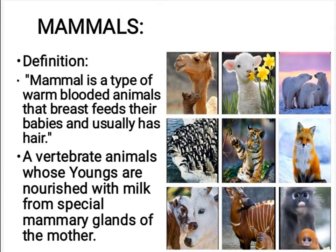Definition of mammals: a mammal is a type of warm-blooded animal that breastfeeds their babies and usually has hair. It is a vertebrate animal whose young are nourished with milk from special mammary glands of the mother.